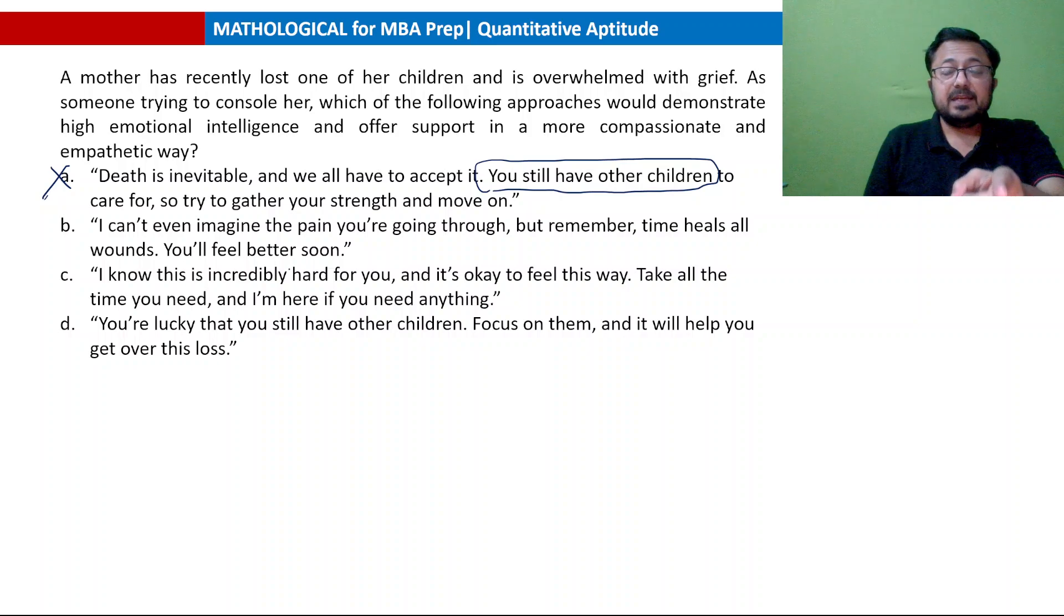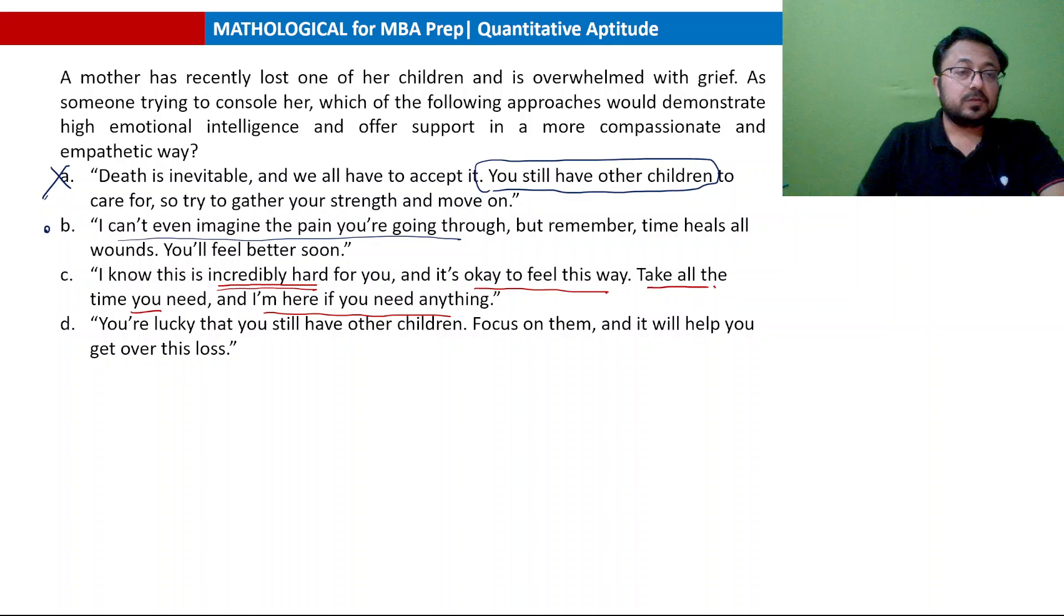Option B: I can't even imagine the pain you are going through. But remember, time heals all wounds. You will feel better soon. This option should be on hold. Option C: I know this is incredibly hard for you and it is okay to feel this way. Take all the time you need and I am here if you need anything. Between B and C, C is better. The person is accepting that this time is difficult for the mother. Take all the time you need and unconditional support at the end. Option D: you are lucky that you still have other children. Absolutely wrong answer. Answer will be option C.